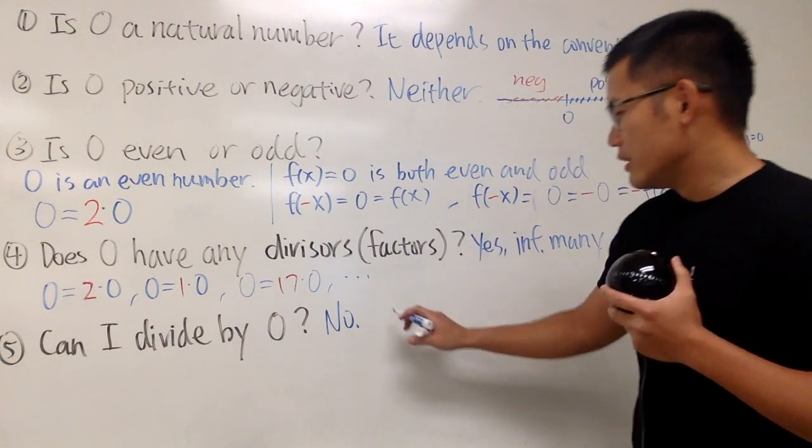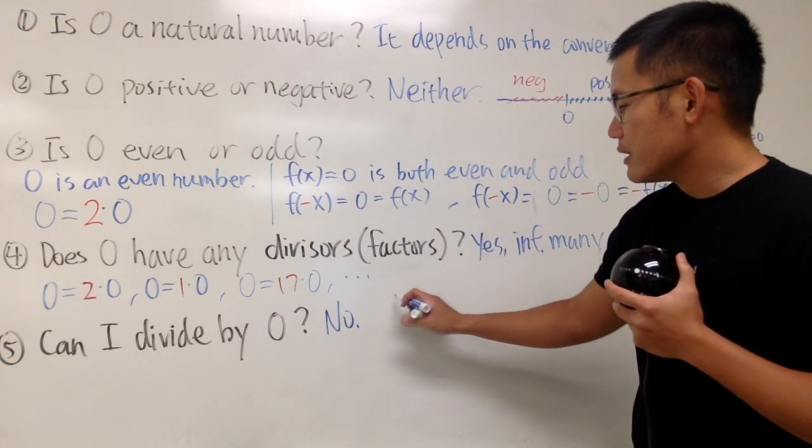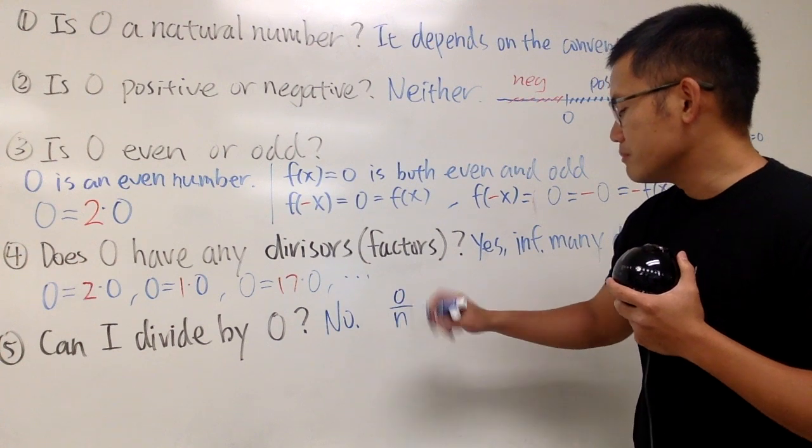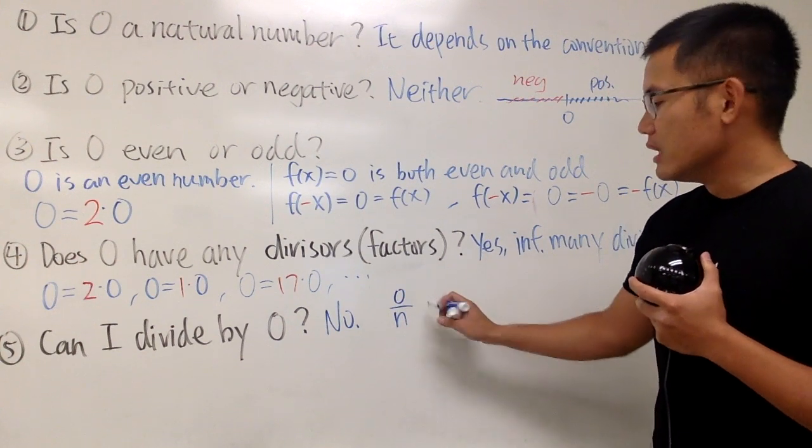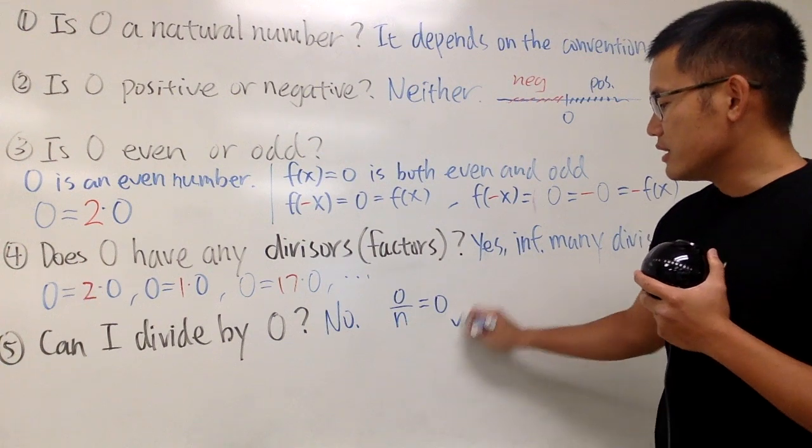But remember this, though. Let me tell you. Whenever we have 0 divided by some number, right? As long as the bottom is not 0, this right here is equal to 0. This is okay.